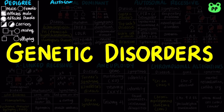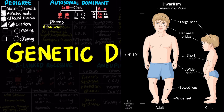Some genetic disorders are caused by dominant alleles, meaning that both autosomal dominant and heterozygous individuals are affected. Achondroplasia is caused by an autosomal dominant mutation in the FGFR3 gene, which codes for fibroblast growth factor receptor 3, resulting in dwarfism in affected individuals.